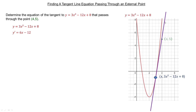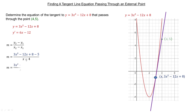Now we're going to use the slope formula to get a general expression for the slope of this tangent line between the external point (4, 5) and our generic point on the curve. Thinking of the curve point as the second point and (4, 5) as the first point: in the numerator, y₂ minus y₁ gives (3x² − 12x + 8) minus 5, and in the denominator we subtract the x-coordinates, giving x minus 4. Simplifying, 8 minus 5 is 3, so the numerator becomes 3x² − 12x + 3.